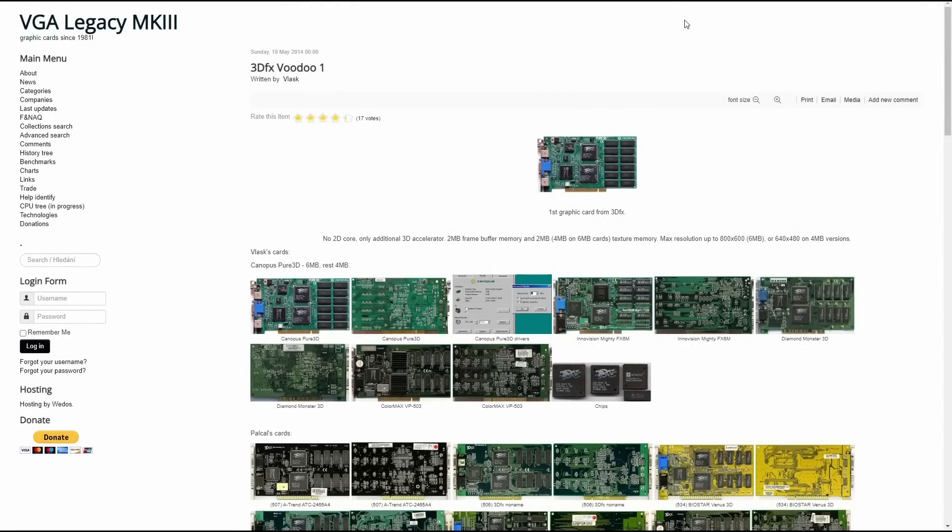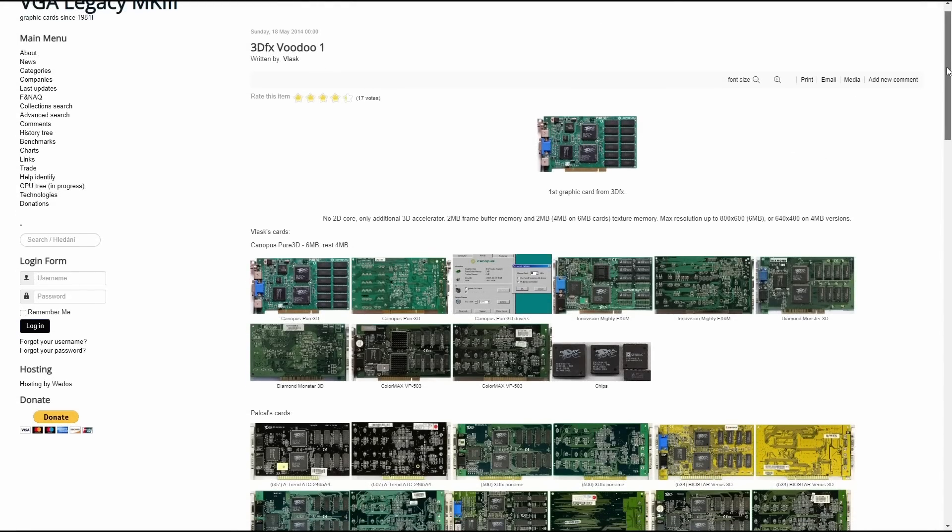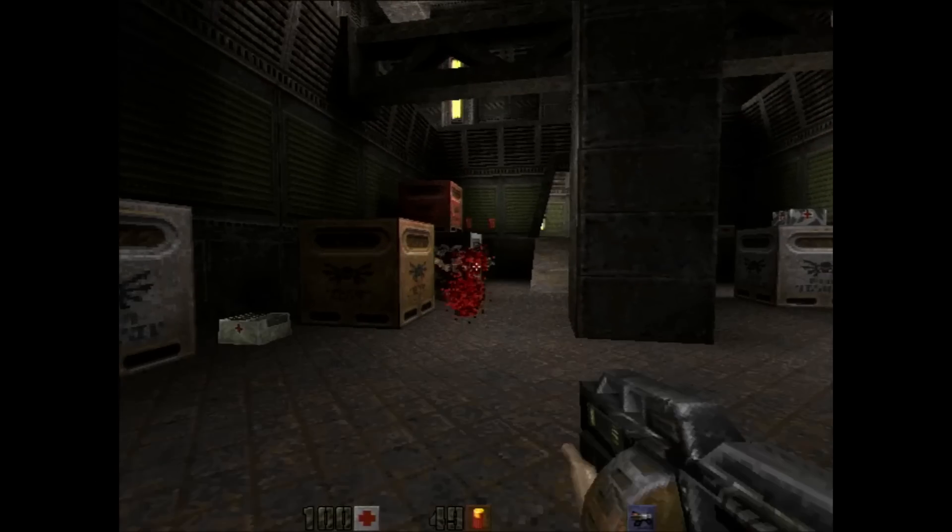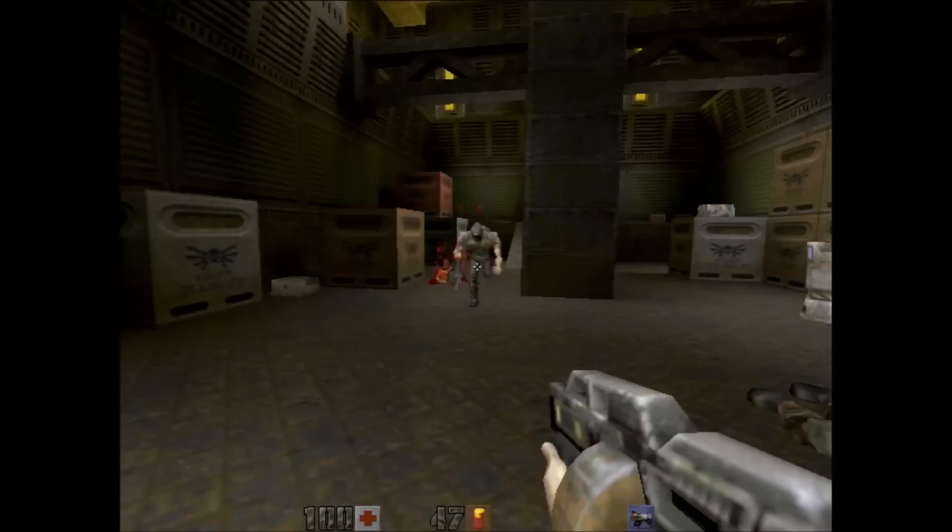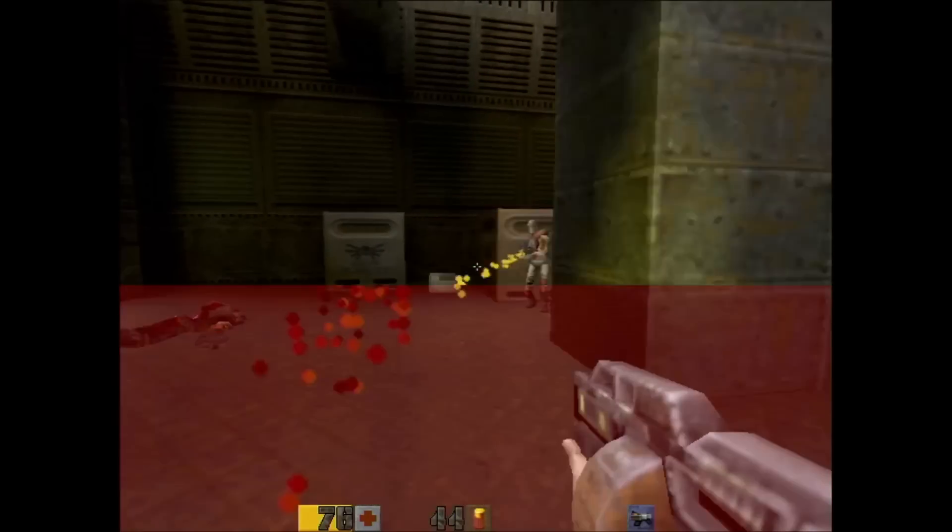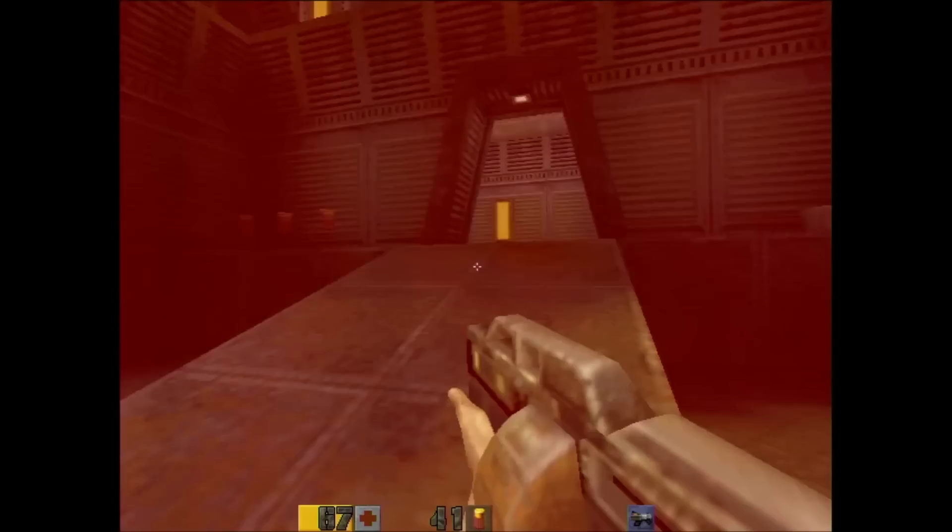The 3dfx Voodoo 3D Accelerator may have been one of the most influential graphics cards since it was released in November 1996. Suddenly games looked different. Smooth gameplay at 640x480 with filtered textures drew a smile on many gamers' faces.